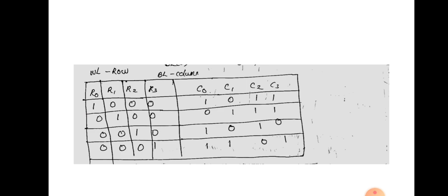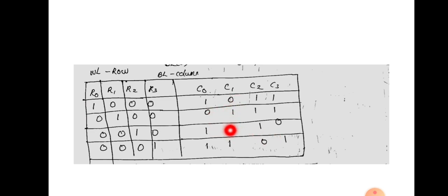However, you have to create your circuit, which is not just the word line. If it's about an input, you will have to track the output and see how it goes. If the output is 0, you always check. This is 1 bit line, this is 2 bit line, this is 3 bit line, and this is 4 bit line.